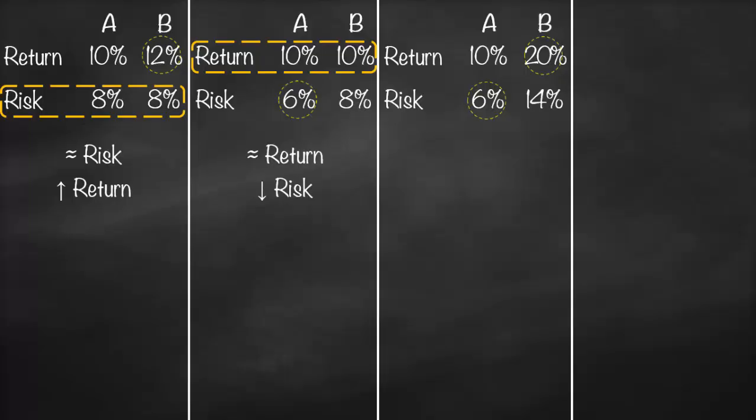Should we choose A because it has the lowest risk, or B because it has the highest return? Usually, we cannot choose directly in this example. In order to be able to choose, we must have either the same risk or the same return. But if risk and return are both different, we cannot make a choice directly. Therefore, we need to calculate something called the coefficient of variation.